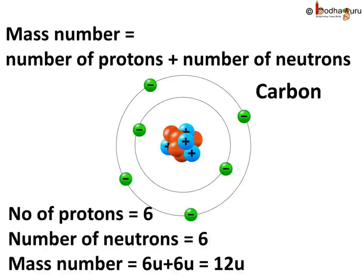The sum of the total number of protons and neutrons present in the nucleus of an atom is known as the mass number of that element's atom. As these are present in the nucleus of an atom, the protons and neutrons are also called nucleons. Thus, for a carbon atom which has 6 protons and 6 neutrons, the mass number is equal to 6u plus 6u, that is equal to 12u.